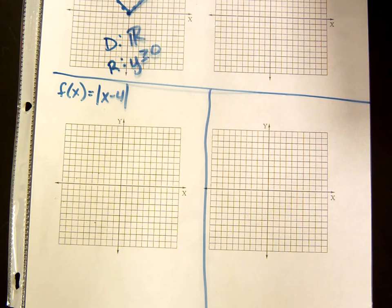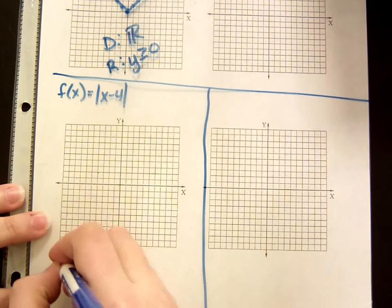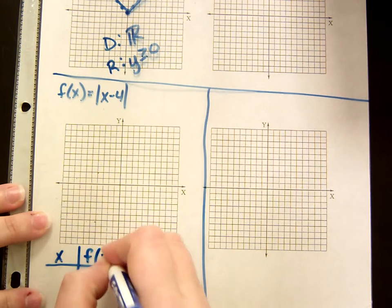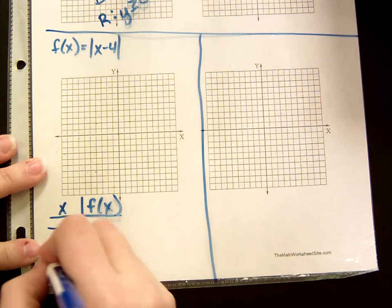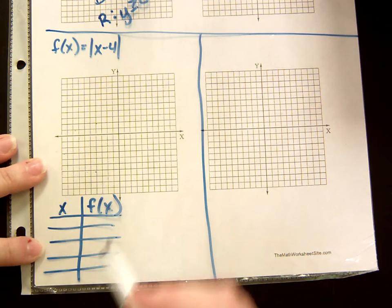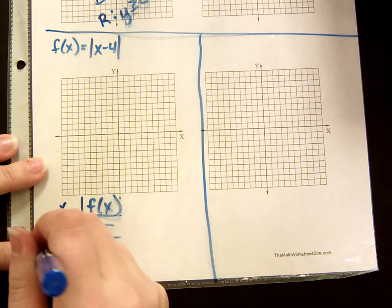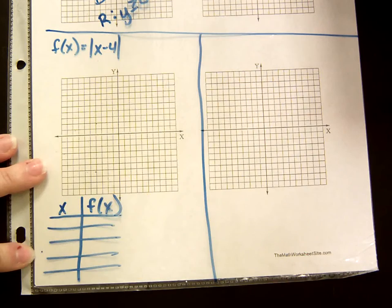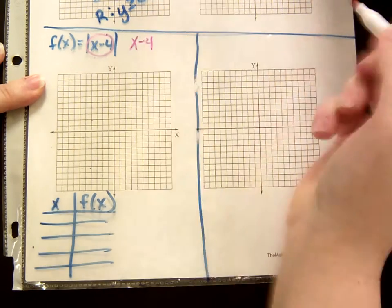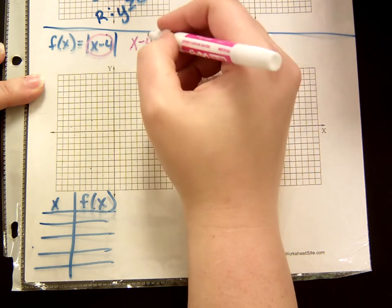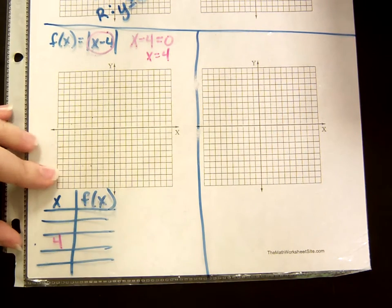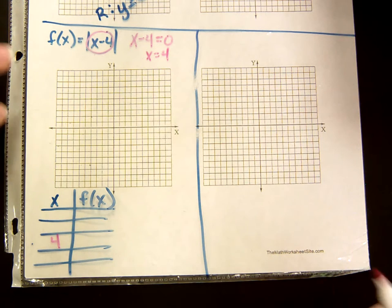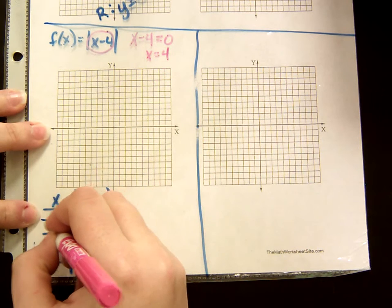Whenever you go to graph these, you want to set up a table with your x values and your f(x) values — your input and output. What we need to do first is find the middle x value, which is the x of our vertex. You take what's inside the absolute value — in this case x minus 4 — set that equal to 0, and solve for x. Adding 4 to both sides gives x equals 4. So the middle x value of our graph is 4.